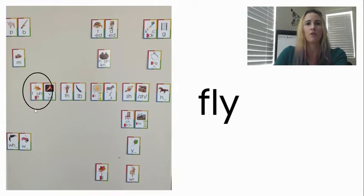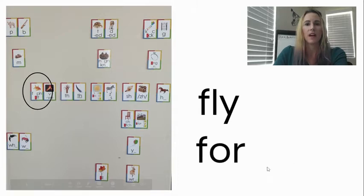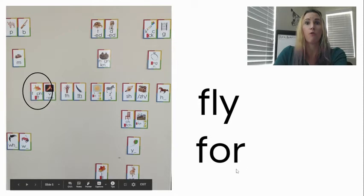Next we're going to have our fricatives. This whole row here is fricatives, which means you have some air that's being pushed out of your mouth and it's going through your mouth, your teeth, your tongue as we make these sounds. So your first word is F-L-I, fly. Say the word fly. Next we have this word F-O-R. Say the word for.